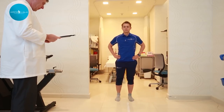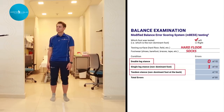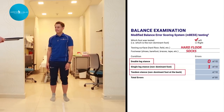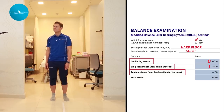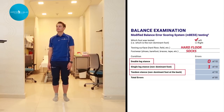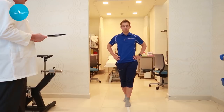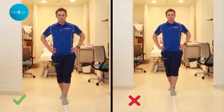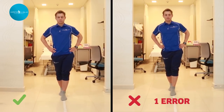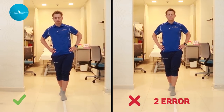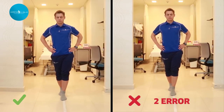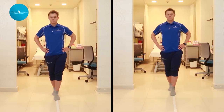The last balance test is the tandem stance. The athlete stands heel to toe with the non-dominant foot at the back, weight evenly distributed on both feet. Eyes closed, hands on hips, maintaining stability for 20 seconds. If the athlete stumbles out of position, he opens his eyes, returns to the original stance, and starts balancing again. Timing starts when the athlete closes his eyes and is ready.